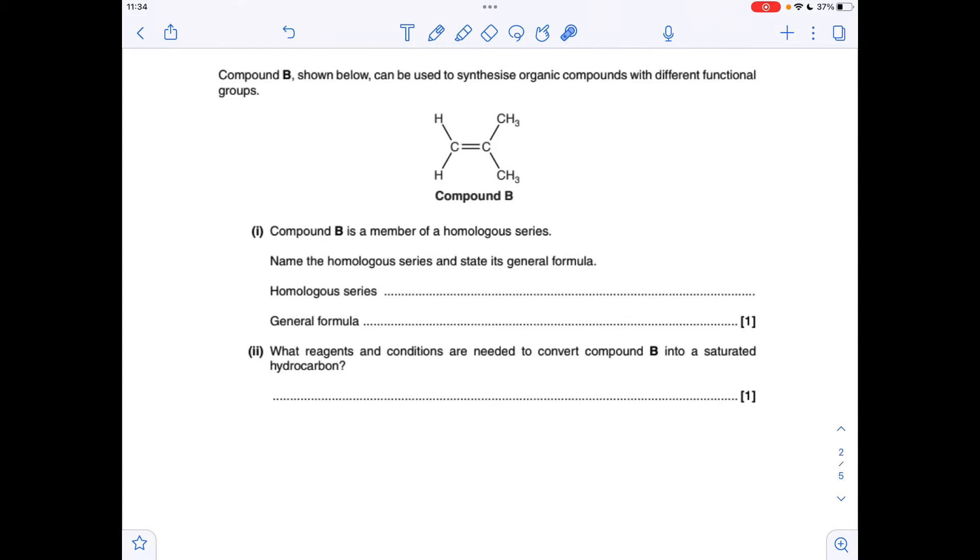Moving away from multiple choice questions now, so a regular question. We've got compound B, it's a member of a homologous series. What's the name and general formula? Obviously that's the alkene homologous series with the general formula CnH2n. Next part, reagents and conditions needed to convert B into a saturated hydrocarbon. Basically we want to turn this C=C double bond into a C-C single bond, so we're going to react it with hydrogen. That's your reagent. Your conditions are you need a nickel catalyst. You also need a temperature of about 150 degrees, but that's not often required in the mark scheme, but I'm going to put it down anyway.